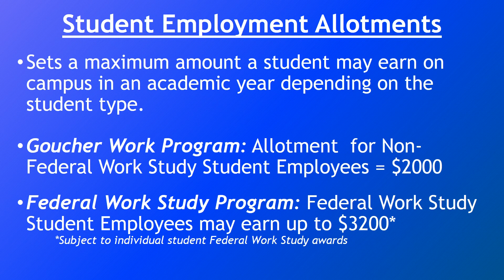The first change coming into effect fall 2016 is the student employment allotments. These allotments set a maximum amount that any student can earn on campus in the academic year, and it is dependent on the type of student. All students fall into one of two categories. The first is the Goucher work program, with an allotment of $2,000, for students who are not federal work study. The federal work study program is reserved for students who have been awarded and accepted their work study award, with an allotment eligible up to $3,200.